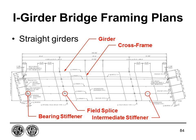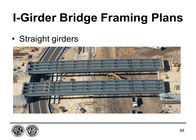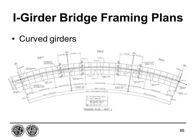With straight girders and only a slight skew, this is a fairly simple bridge to analyze. A photo of a straight girder bridge shows girders spanning between supports, cross frames connecting adjacent girders, and darker banded areas along the girders where bolted field splices are located—clusters of bolts connecting web sections of adjacent girder pieces.